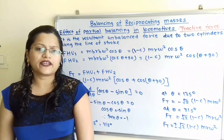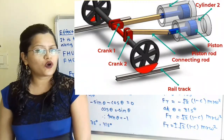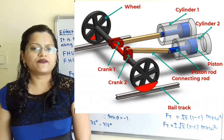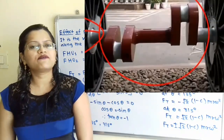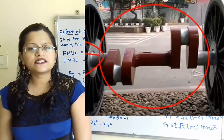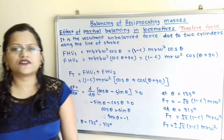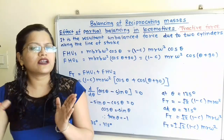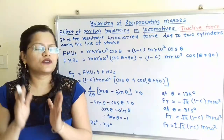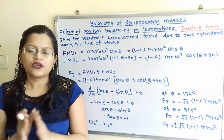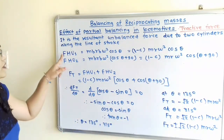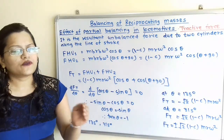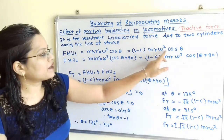Now we move to the second effect: tractive force. If we observe the diagram for the locomotive, there is an arrangement of two piston-cylinders, and the cranks are placed 90° apart. So if the crank for cylinder 1 is at 0°, then for cylinder 2 the crank is at 90°. Tractive force is the resultant unbalanced force due to these two cylinders along the line of stroke. The horizontal component of the balancing mass is MbRb·ω²·cosθ, so for cylinder 1: FHu1 = MbRb·ω²·cosθ = (1 − C)mRω²·cosθ, where C is the fraction of reciprocating masses to be balanced.